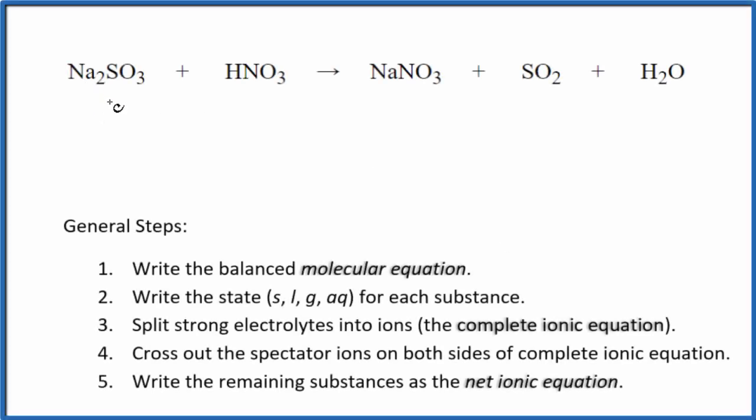In this video we'll write the balanced net ionic equation for Na2SO3 plus HNO3. This is sodium sulfite and this is nitric acid. It's important to note that this is dilute nitric acid. If you had concentrated, you would end up with different products. There's a link in the description if you're looking for the concentrated version.